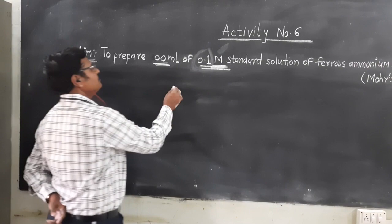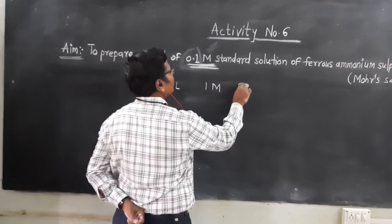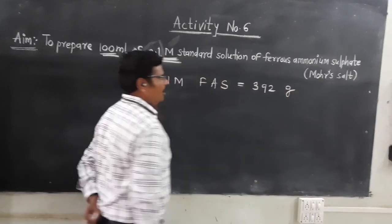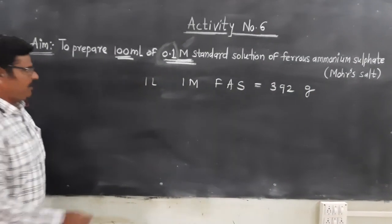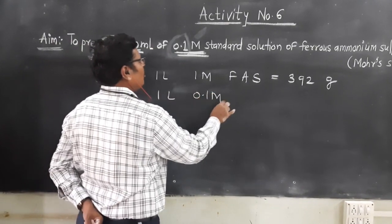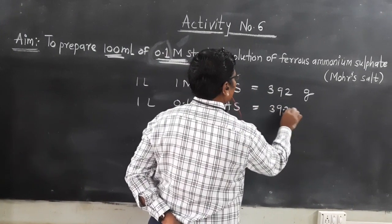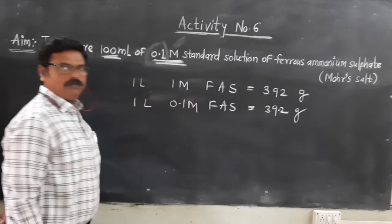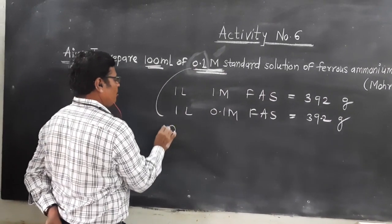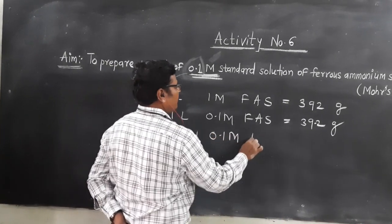For 1 litre of 1 molar solution of FAS, 392 gram of ferrous ammonium sulfate powder is required. For preparation of 1 litre of 0.1 molar FAS, we require 39.2 gram. But we have to prepare 0.1 molar, 100 ml FAS solution.